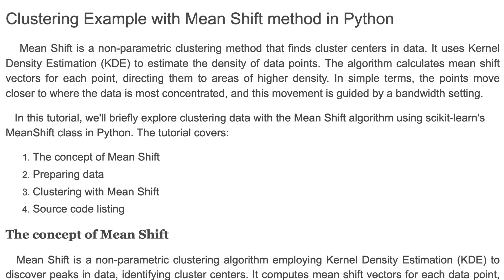Hello and welcome back to my channel. In this tutorial I'm going to explain clustering with the MeanShift method in Python. MeanShift is a non-parametric clustering method that finds cluster centers in data. It uses kernel density estimation to estimate the density of data points.